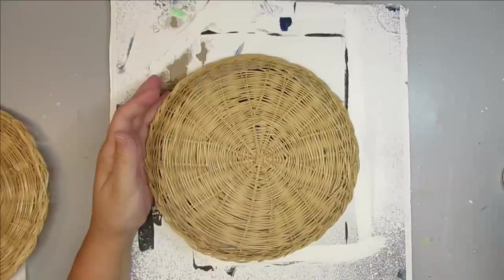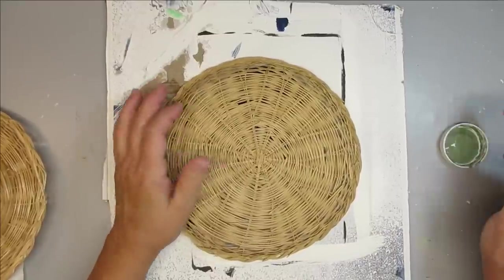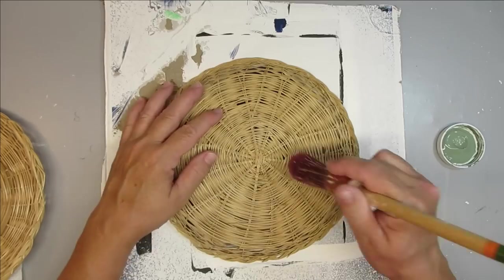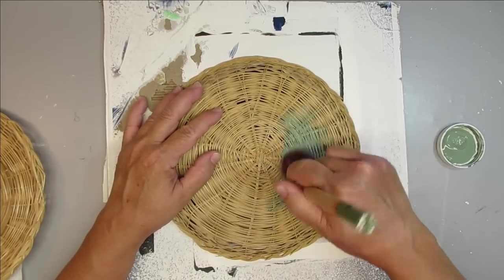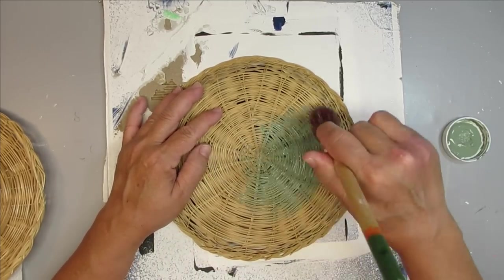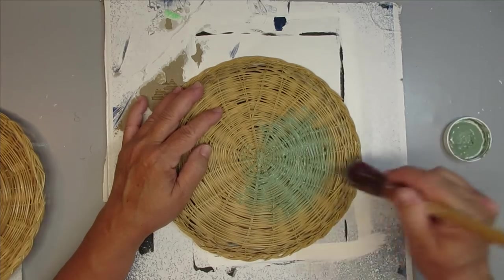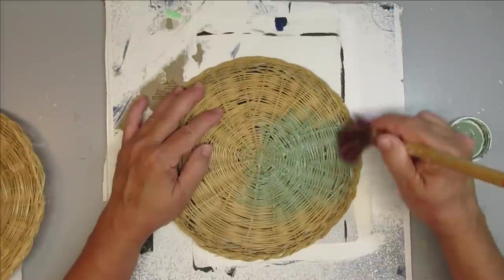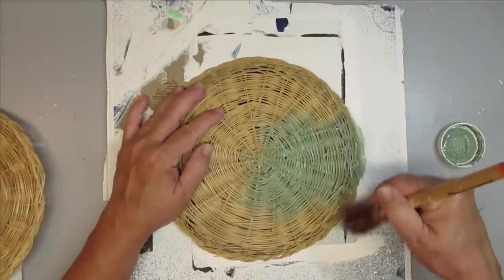For my first project, I'm going to upcycle two of these little dinner plate wicker baskets. They're meant for when you're at a picnic and you've got a flimsy paper plate and you can put it on top here and then you can have a nice sturdy surface for your food. But I'm going to give them an upcycle.